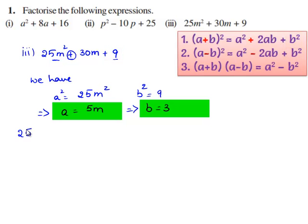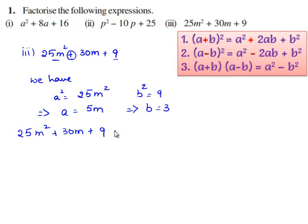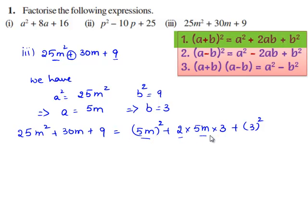We rewrite the given expression: 25m² + 30m + 9 can be written as (5m)² + 2 × 5m × 3 + 3². It is of the form a² + 2ab + b², which is (a+b)².